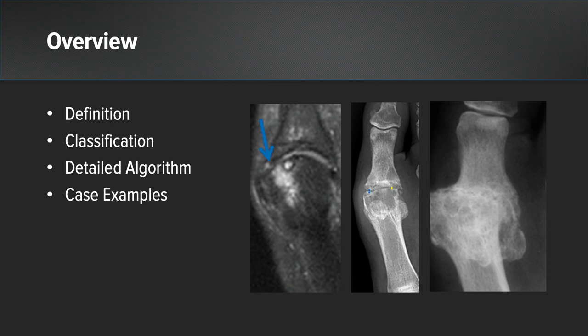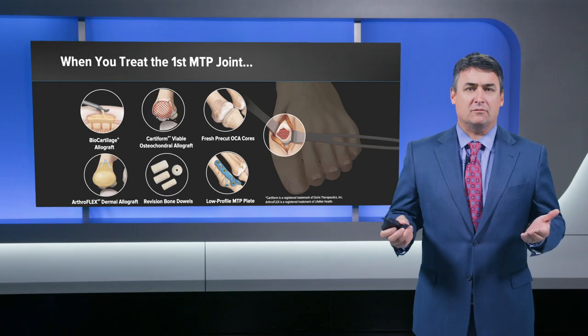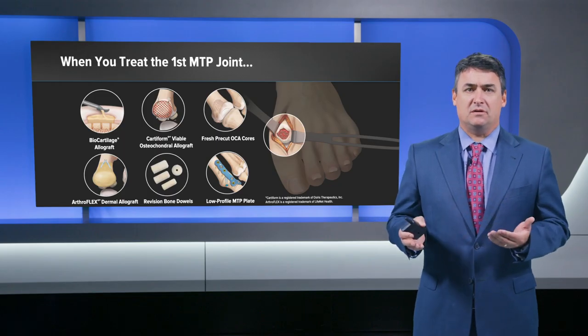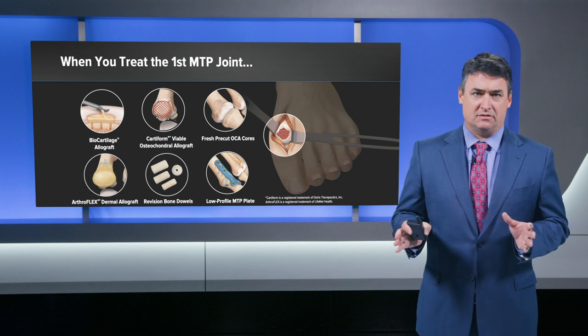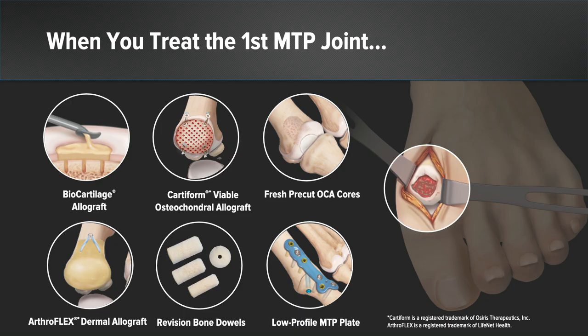In terms of the overview of this presentation, we're going to define Hallux Rigidus first, then talk about the classification system we used, apply our detailed algorithm for Hallux Rigidus, and end with some case examples. When you think of the first MTP joint, Arthrox has many options: Biocartilage, Cartiform, pre-cut cores, arthroplasty, interpositional arthroplasty with the Arthroflex, bone dowels, as well as MTP arthrodesis, and they all have a role in our algorithm.